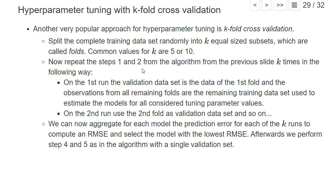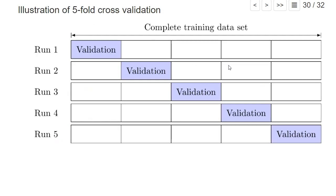Another very popular approach for hyperparameter tuning is k-fold cross validation. In a sense it's a natural extension of splitting the training data set into a validation data set and a remaining data set, and it's best illustrated with a graph. This is created for five-fold cross validation. The k is some number — typically k could be three, five, or ten.